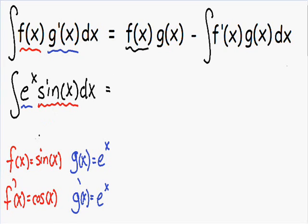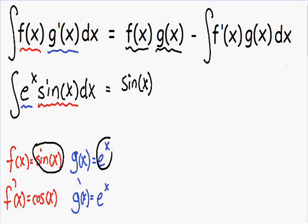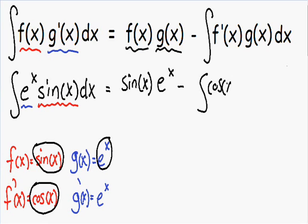So now we just need to plug everything into our formula. We start with f of x, which is sine of x, multiplied by g of x, which is e to the x. This is being subtracted by the integral of f prime of x — the cosine of x — multiplied by g of x, which is e to the x, dx. So now we've performed integration by parts. But our new integral is not any easier to solve than what we started with. We had the integral of e to the x times sine of x, and now we have the integral of cosine of x times e to the x — it's not any simpler.